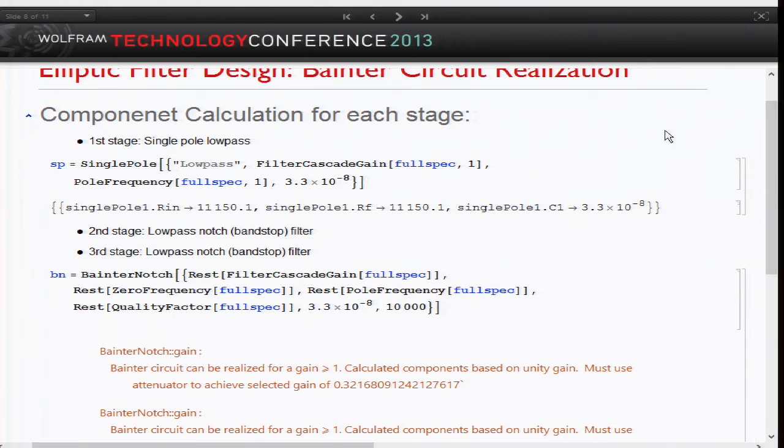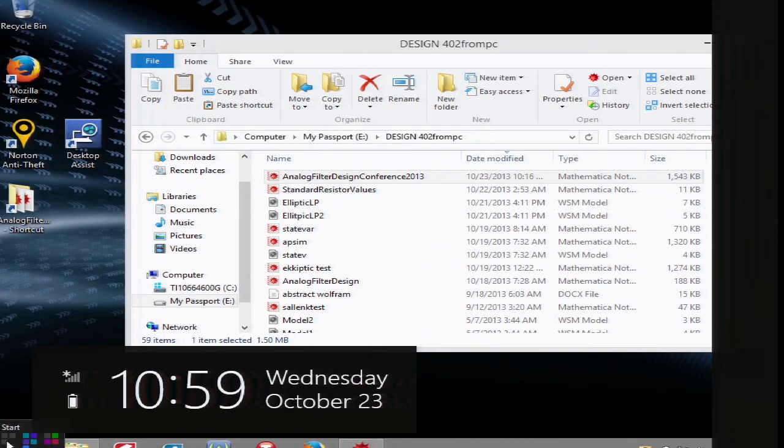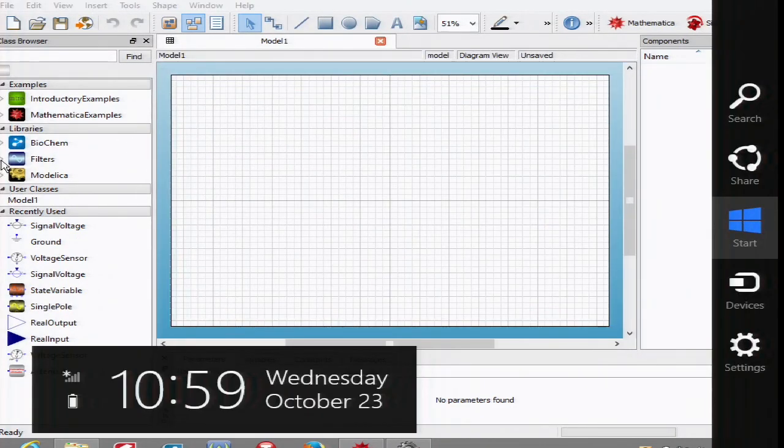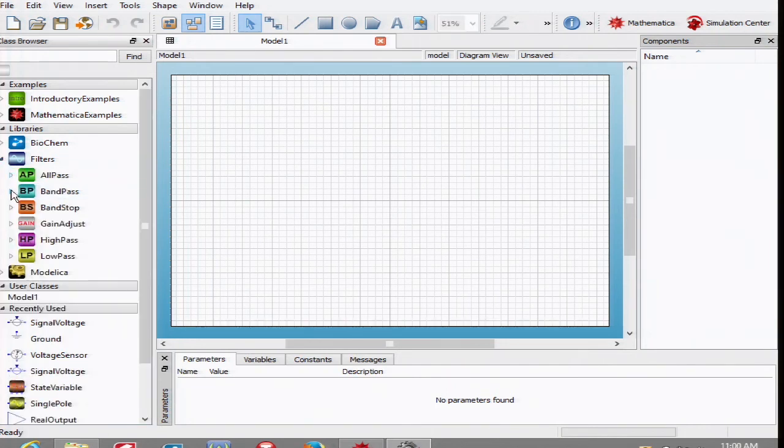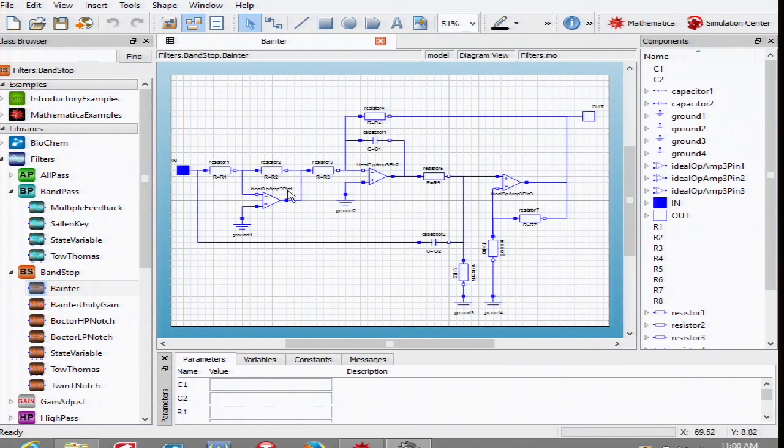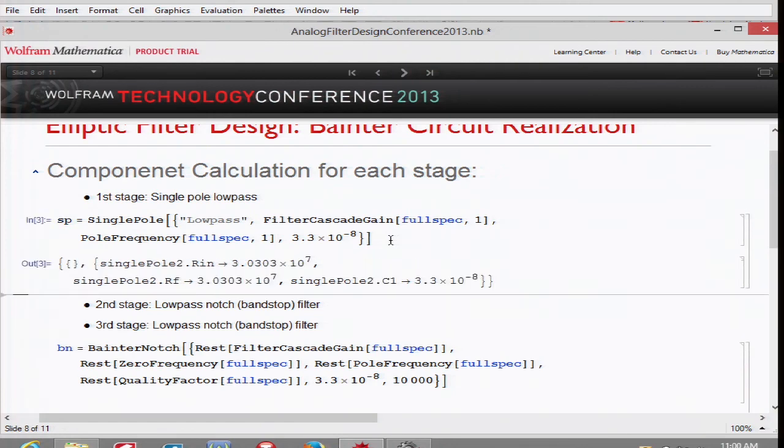Let's say we would pick Bainter circuit realization. So here we have a library of filters. We will be using the Bainter filter. This is the component view. As we saw, we need a fifth order filter, three stages. So we will need one single pole, and then second and third stage. We picked the Bainter topology.